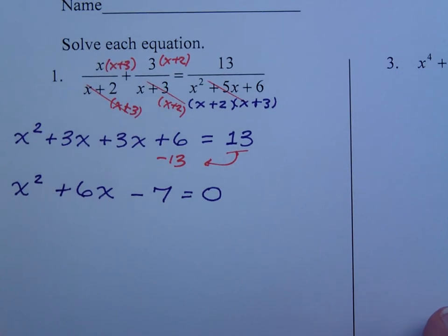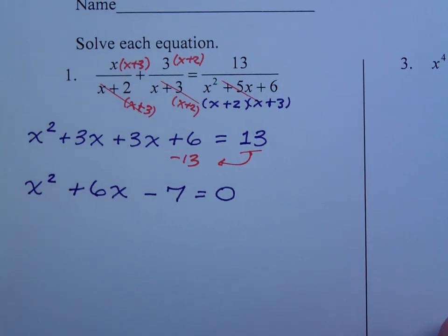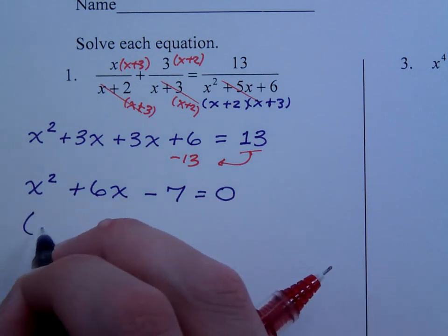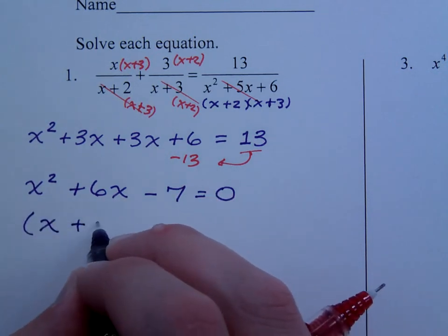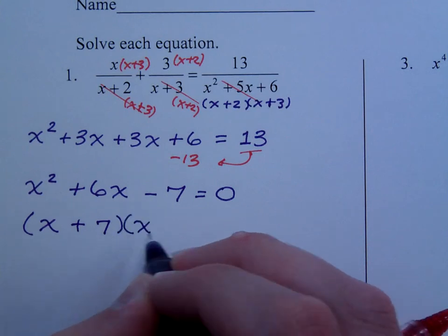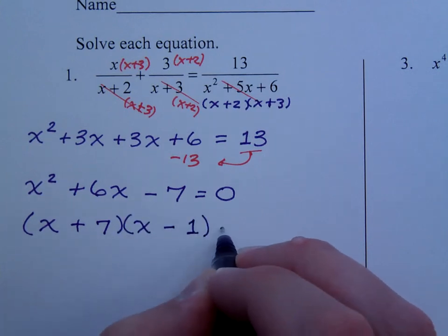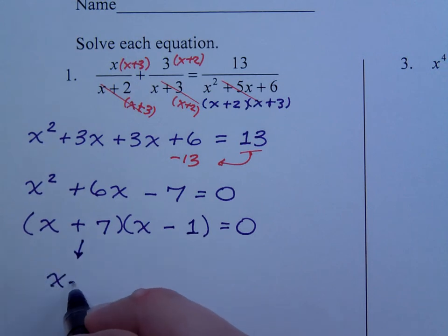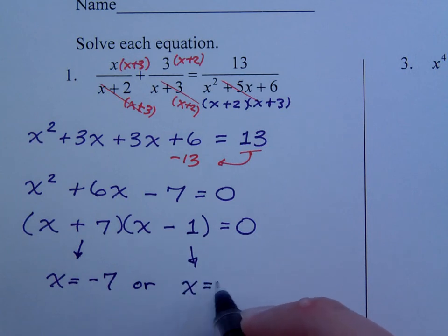The first thing we would really like to try to do here is to see if this factors. And this guy factors very nicely. It factors as x plus 7 times x minus 1. And when I finish solving this, I end up with x equals negative 7 or x equals positive 1.